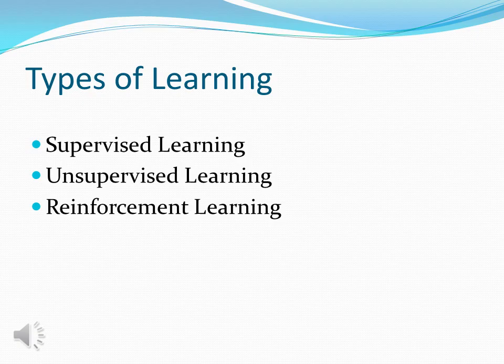The third one is reinforcement learning. It is the training of machine learning models to make a sequence of decisions. The agent learns to achieve a goal in an uncertain, potentially complex environment. In reinforcement learning, an artificial intelligence faces a game-like situation. The computer employs trial and error to come up with a solution to the problem.